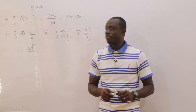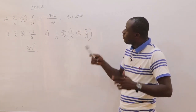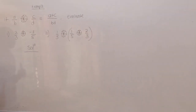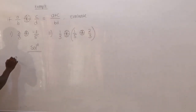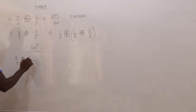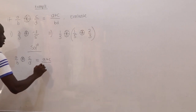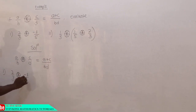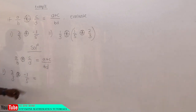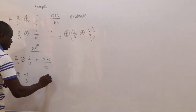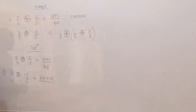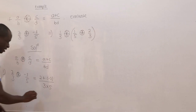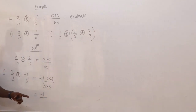Let's consider this example. If (a/b) ⊕ (c/d) = (a+c)/(bd) — that is, addition of numerators and multiplication of denominators — the first part is (2/3) ⊕ (−3/5). Using the rule: a+c = 2 + (−3) = −1, and b×d = 3×5 = 15. So the answer is −1/15. This is so easy.